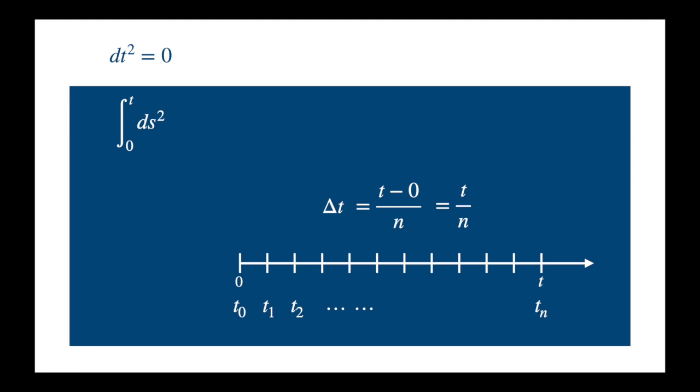Then the integral of ds squared can be written as the sum of the squares of delta t. So we are approximating continuous by discrete, or infinitesimals by finite. And as n becomes very large, we expect this discrete sum to approach the value of the integral.